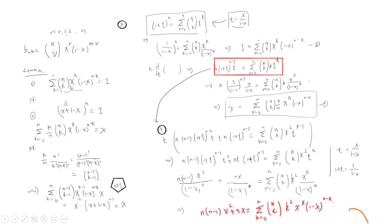The first lemma is that the sum from k=0 to n of n-choose-k times x^k times (1-x)^(n-k) equals 1. This proof is very easy — it just uses the binomial coefficient theorem, which I've referenced here. The second lemma states that if you place k/n in that sum, it becomes x. The proof uses the definition of the binomial coefficient, expanding to get a shifted index and combining terms to extract x.